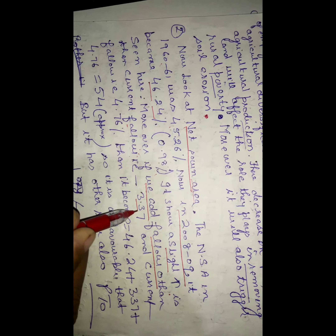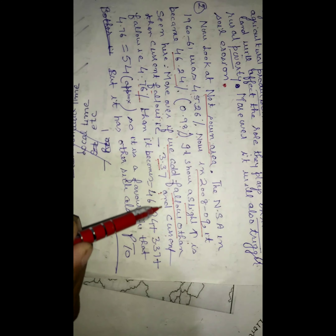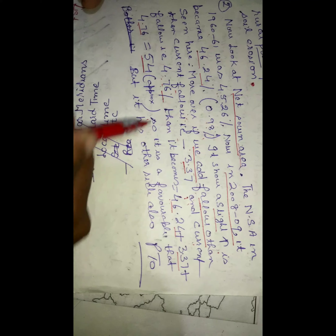Moreover, if we add fallow land other than current fallow — that is 3.37% — and current fallow land — that is 4.76% — to the net sown area of 46.24%, the total becomes approximately 54%. So it is favorable that the net sown area has increased since 1960-61.